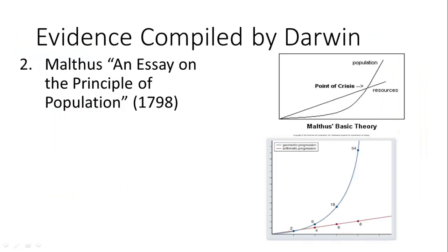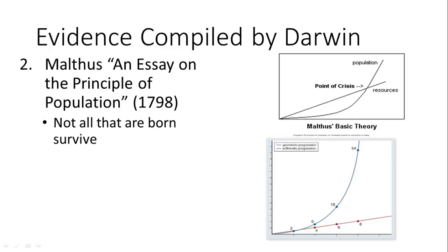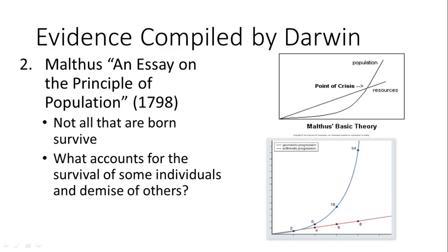Darwin was also influenced by non-biologist scientists, including an economist named Malthus who wrote An Essay on the Principle of Population. Malthus noticed that human populations seemed to be growing at an exponential rate, but at some point you're going to run out of resources — he called this the point of crisis. What Darwin took from this was: there are a lot of children born, not all of them survive. So what accounts for some surviving and others not? His conclusion was there must be some sort of selection process occurring, and he saw the application of this in living things throughout the world, not just in humans.